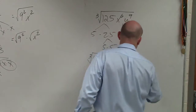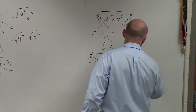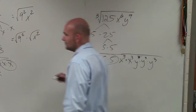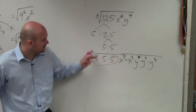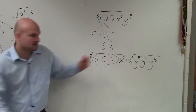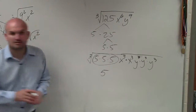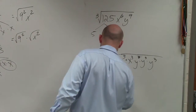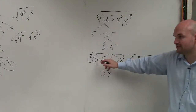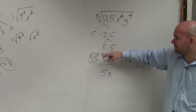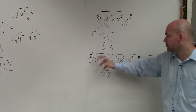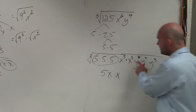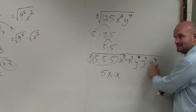And then y to the 9th I can rewrite as y cubed times y cubed times y cubed. Because now I can take the cube root of x cubed — the cube root of x cubed is just x. The cube root of 125 is 5. The cube root of x cubed is x. And then this is going to be y times y times y.